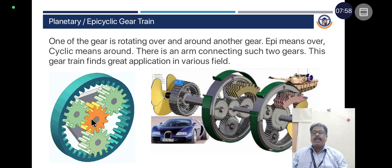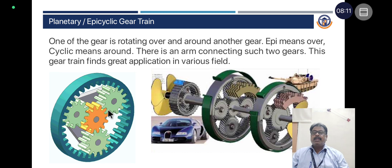In this example, there is a sun gear. Around it, three planetary gears and one annular wheel are present. Any one of the set will be locked and the input and output will be taken from the other two. This is called a planetary or epicyclic gear train.